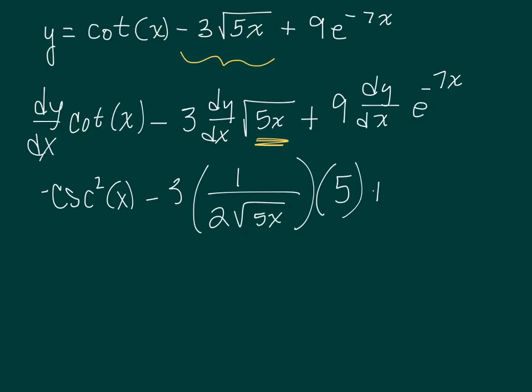Then we have plus 9. The derivative of e to the anything is e to the anything times the derivative of the anything. Well the anything is the negative 7x. What's the derivative of negative 7x? Negative 7.